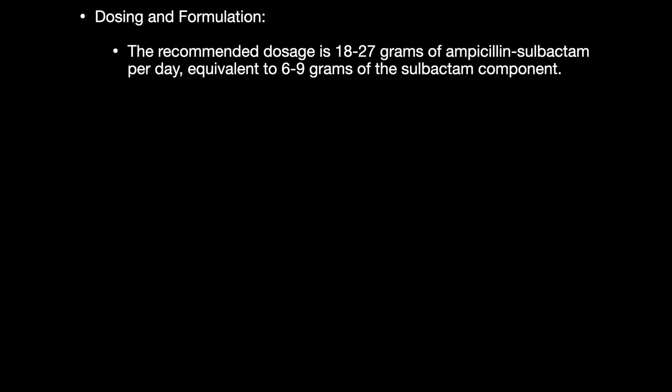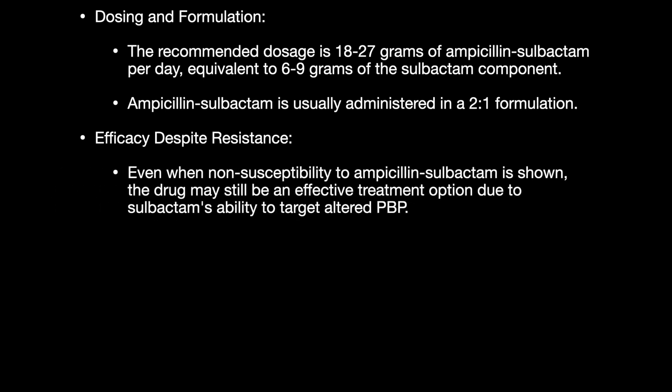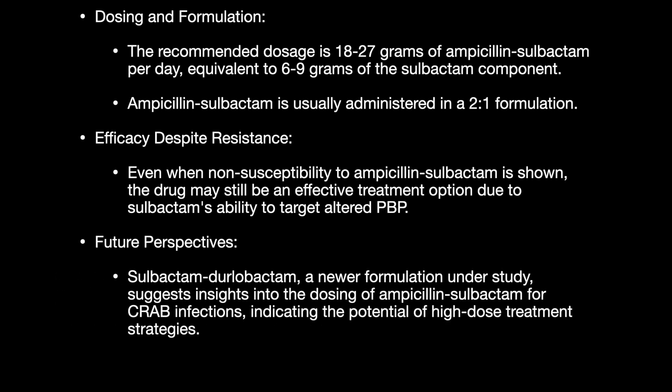The recommended dose is 18 to 27 grams of ampicillin-sulbactam per day, equivalent to six to nine grams of the sulbactam component. Ampicillin-sulbactam is usually administered in a two-to-one formulation. Even when non-susceptibility to ampicillin-sulbactam is demonstrated, the drug may still be effective due to sulbactam's ability to target altered PBPs. A newer formulation — sulbactam-durlobactam — currently under study also supports the rationale of high-dose sulbactam treatment strategies for CRAB infections.